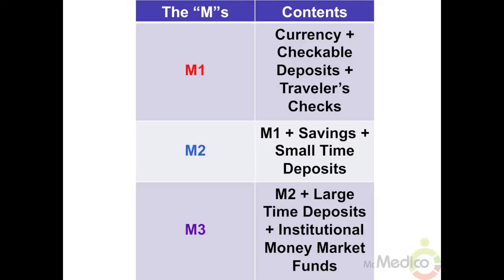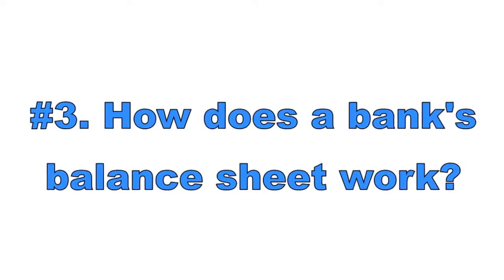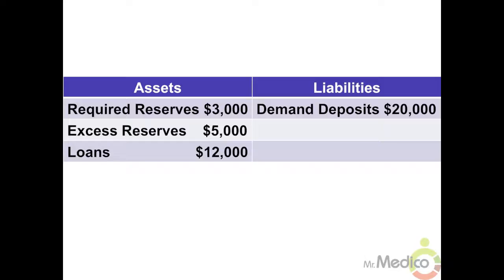M3 consists of M2 plus large time deposits that are greater than a hundred thousand dollars and institutional money market accounts. Number three: how does a bank's balance sheet work? A bank's balance sheet, or T-account, lists the assets — what it owns — and liabilities — what it owes — of the institution. The two sides of the balance sheet must equal each other after a transaction is made.